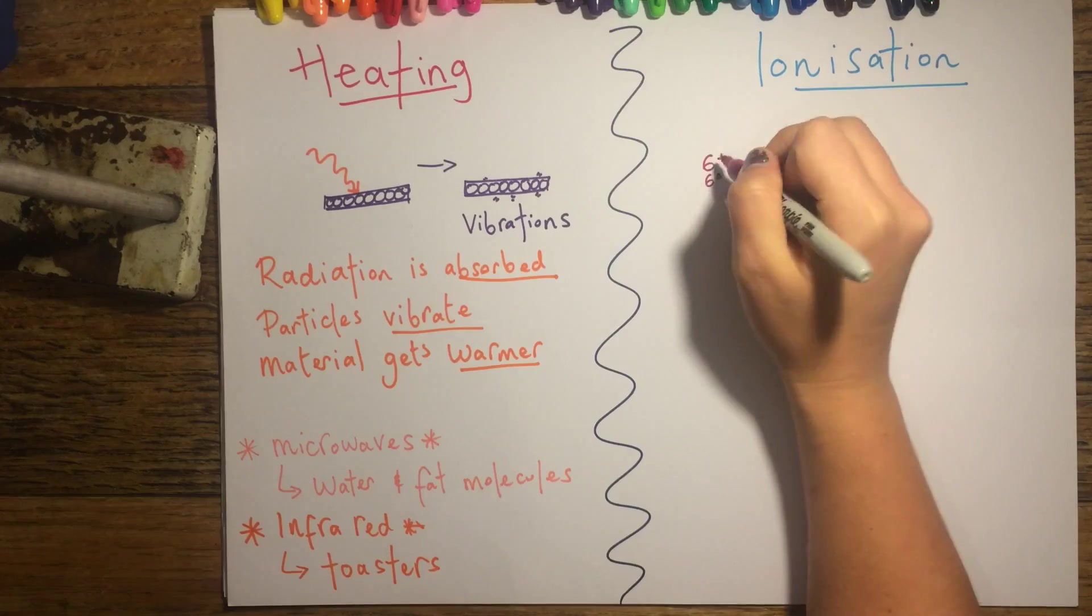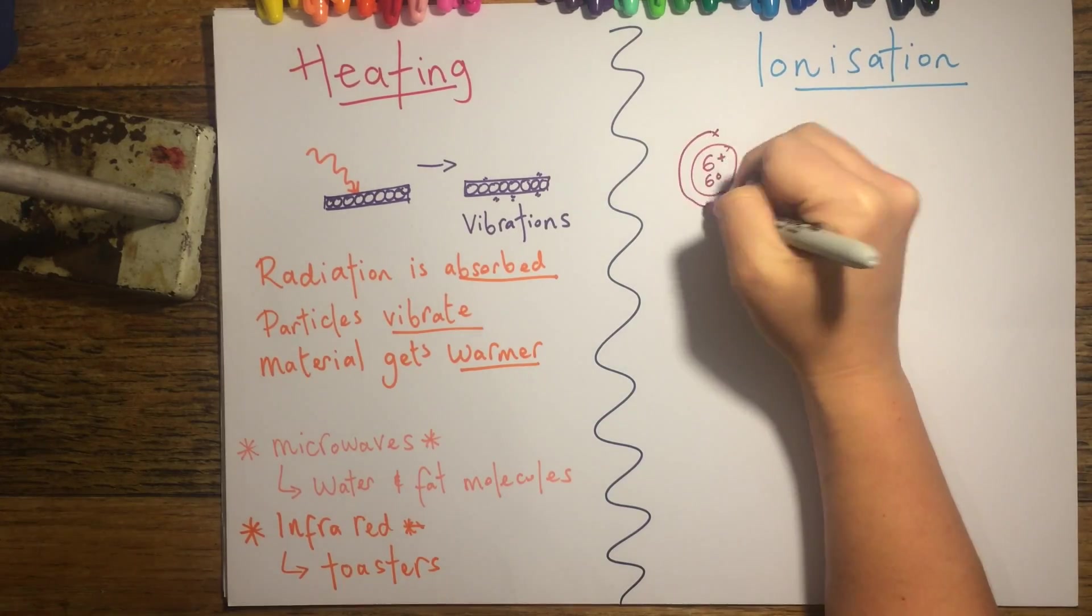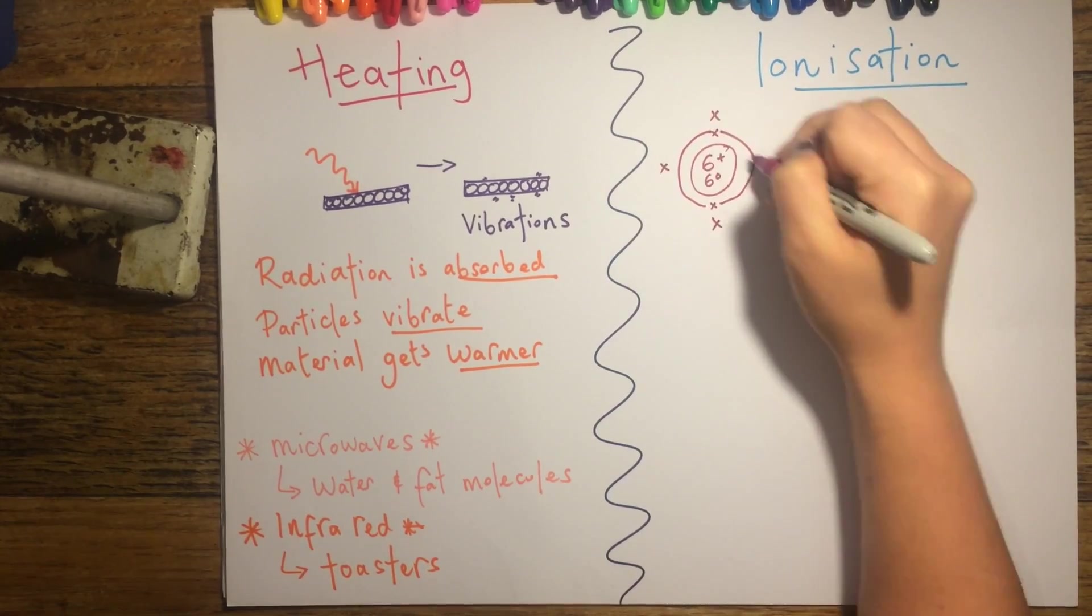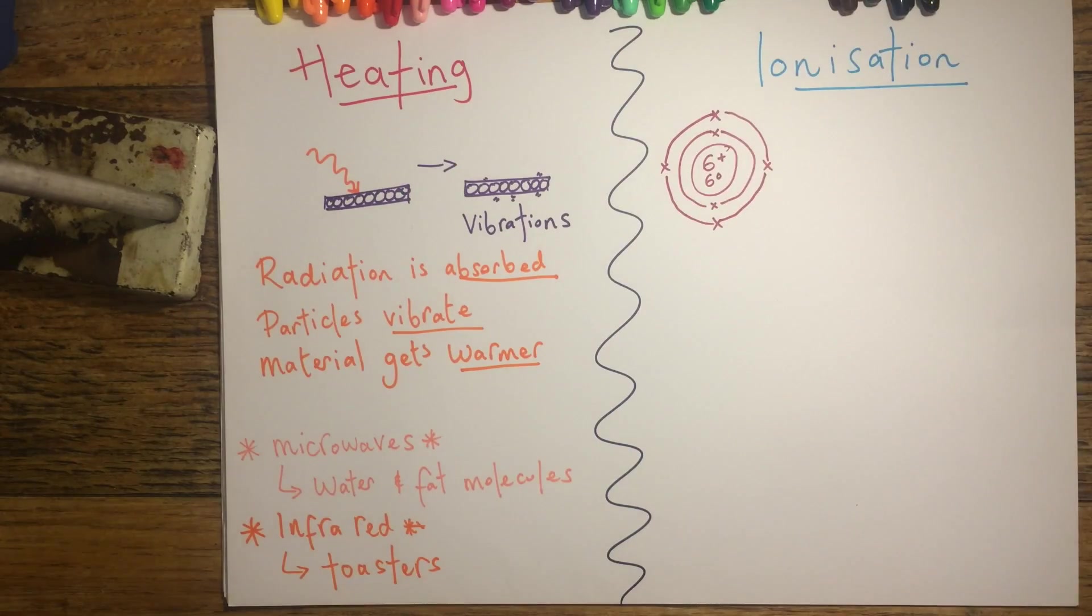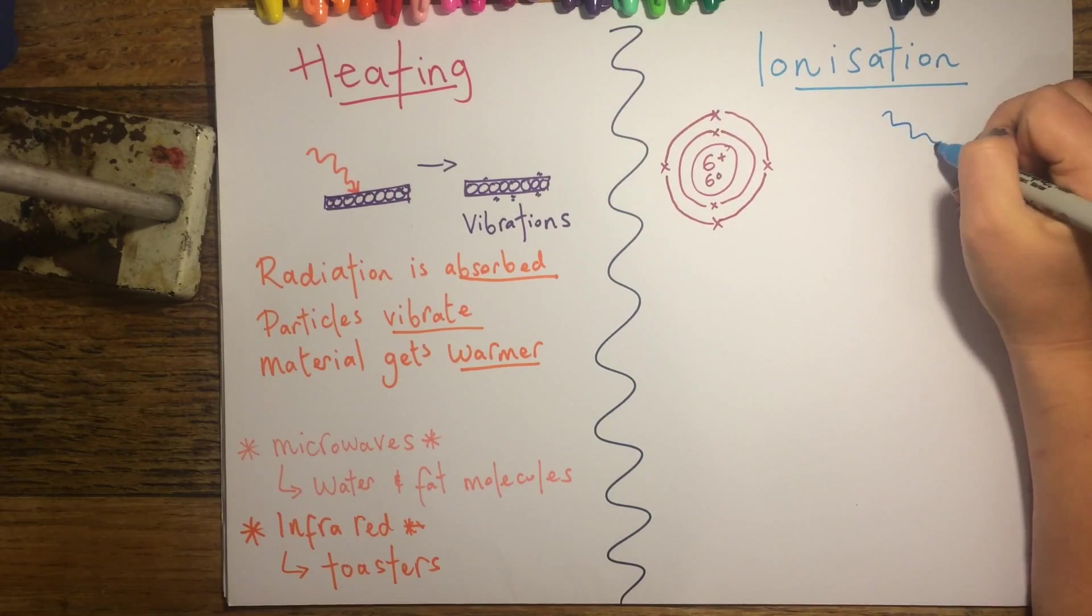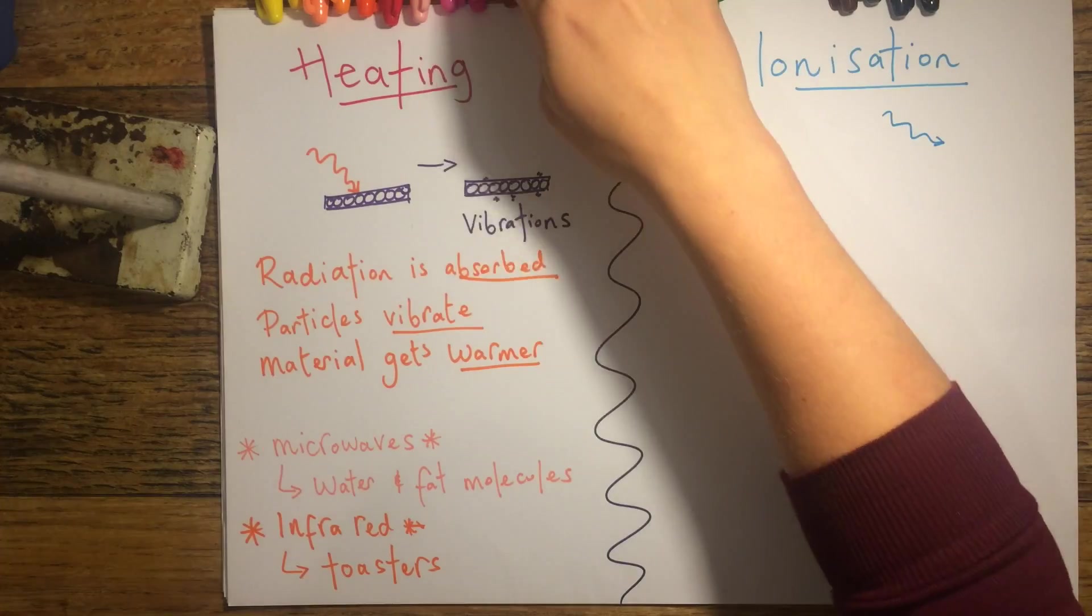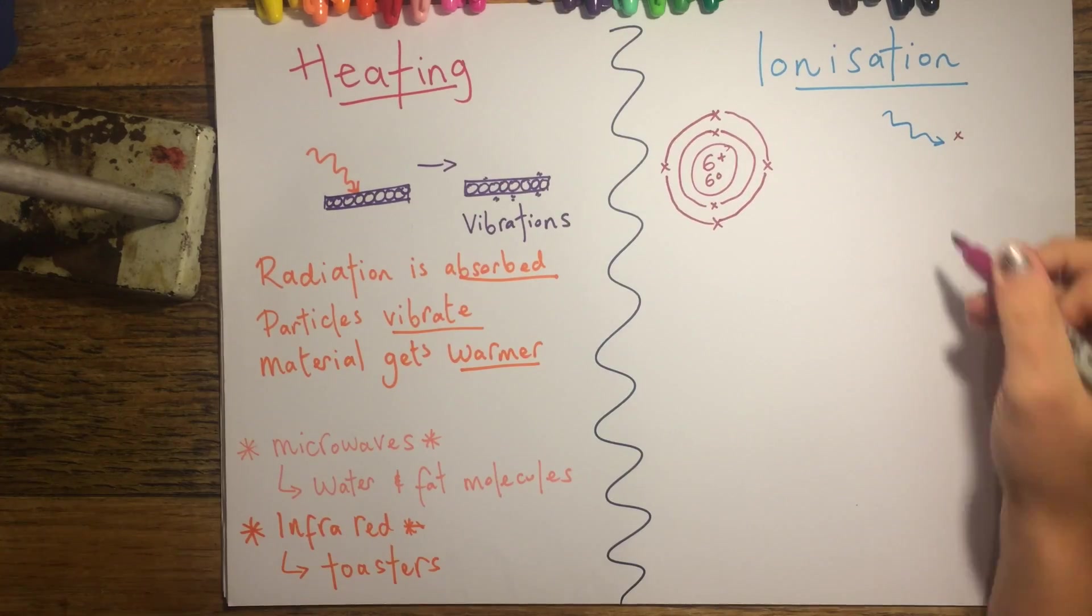When we're thinking about ionisation, we first of all need to think about what we already know about the atom. We know that in the nucleus there are protons which are positively charged, neutrons which have no charge, and then around the outside of the atom in shells we have electrons which have a negative charge.